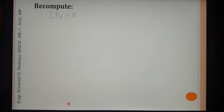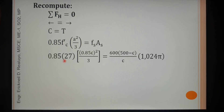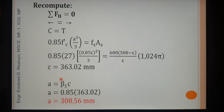Since the assumption was wrong, we recompute. Setting C equals T again using the final expression, we re-express A in terms of C using beta₁·C. For FS, we use the strain-compatibility expression. All values are available except C, giving us a cubic equation. Solving, C equals 363.02 mm. Multiplying C by beta₁ gives us our corrected A equal to 308.56 mm.